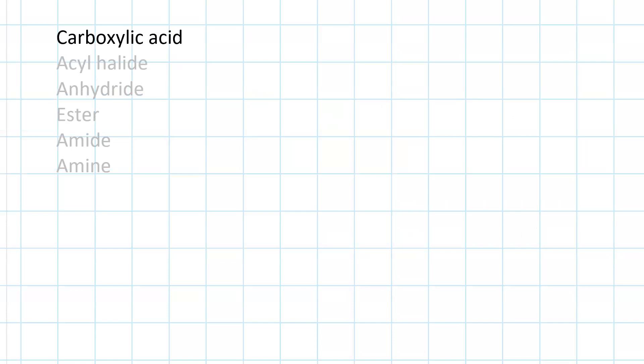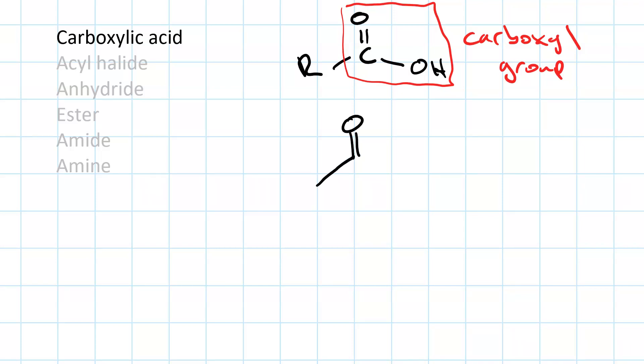Carboxylic acids contain a carboxyl group. And a carboxyl group is a carbonyl carbon with a hydroxyl group attached to it. So they look like this. There's your carbonyl with your hydroxyl. And this whole thing is called a carboxyl group. And here's an example, this is acetic acid, the active ingredient in vinegar. Here is its condensed structure, CH3, COOH. That COOH is how you do a carboxyl group.